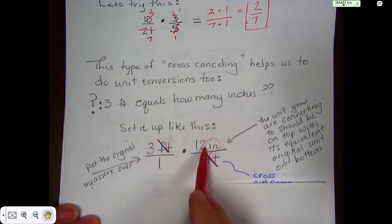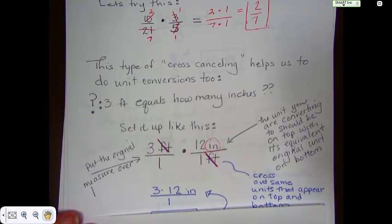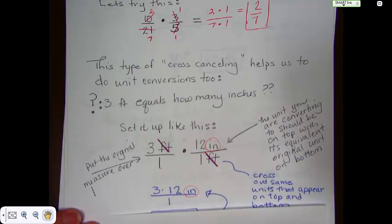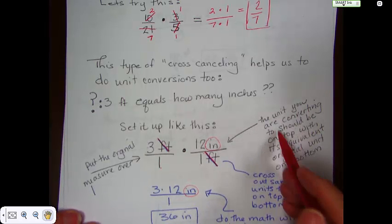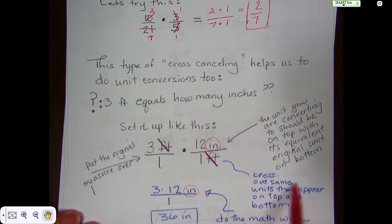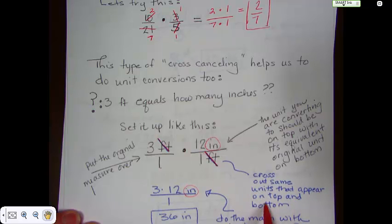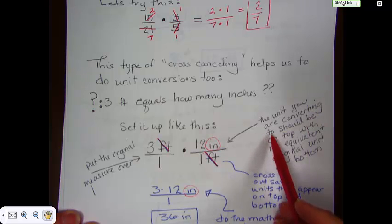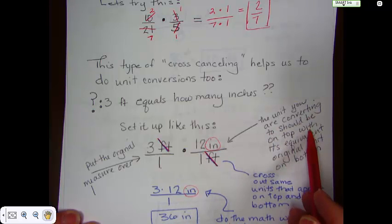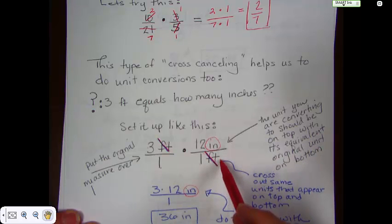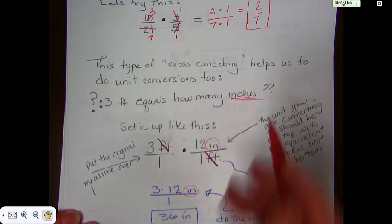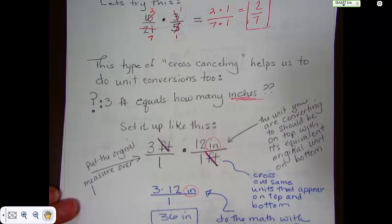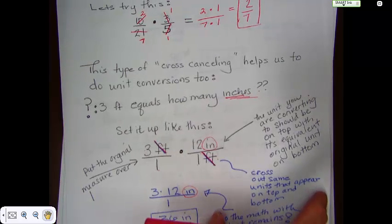3 times 12, which is what you wanted to do in your head anyway, right? And, 3 times 12 inches over 1 equals 36 inches. Now, there's some kind of cool notes here that might help you out. Remember, you're going to cross out the same units that appear on the top and the bottom with these. Note that the unit you're converting will be, for this problem, will be on its top with its equivalent original on the bottom. So, 12 inches is 1 feet. We're trying to get 2 inches. And, then, you just do the math. Ended up with 36 inches, which you already knew that that was going to be 36 inches.